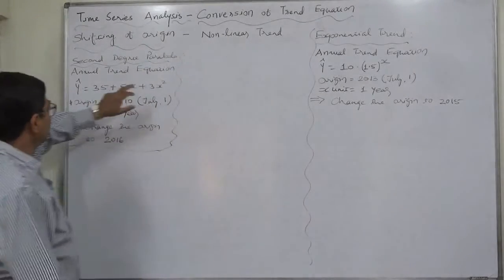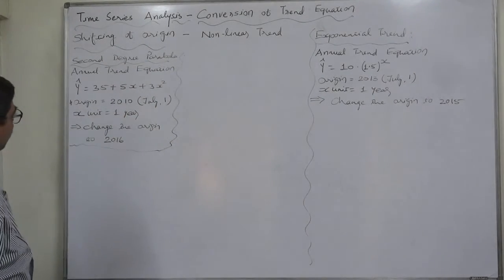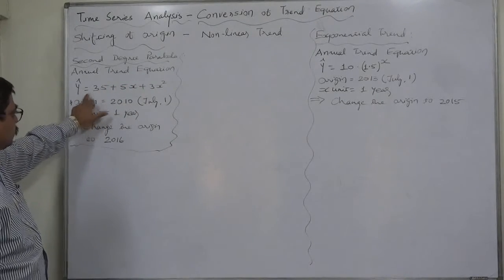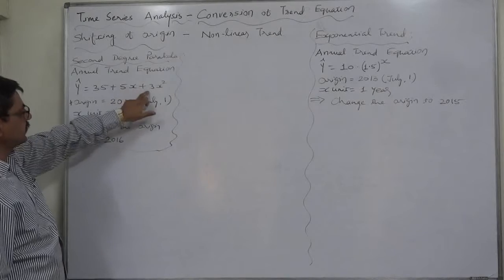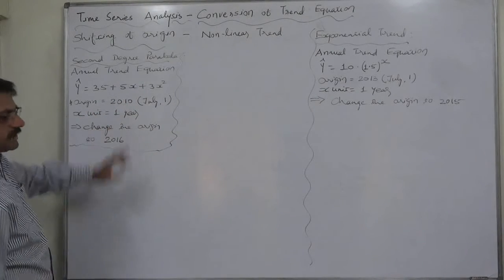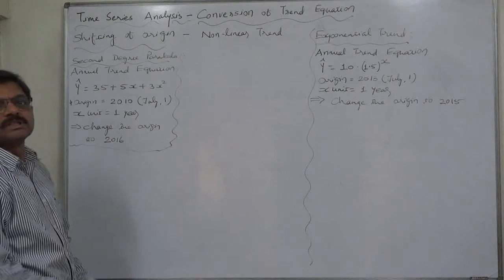Let's first take the case of second degree parabola. The annual trend equation given is estimated value of y equals to 35 plus 5x plus 3x squared. Origin is 2010 and x unit is 1 year. Change the origin to 2016.